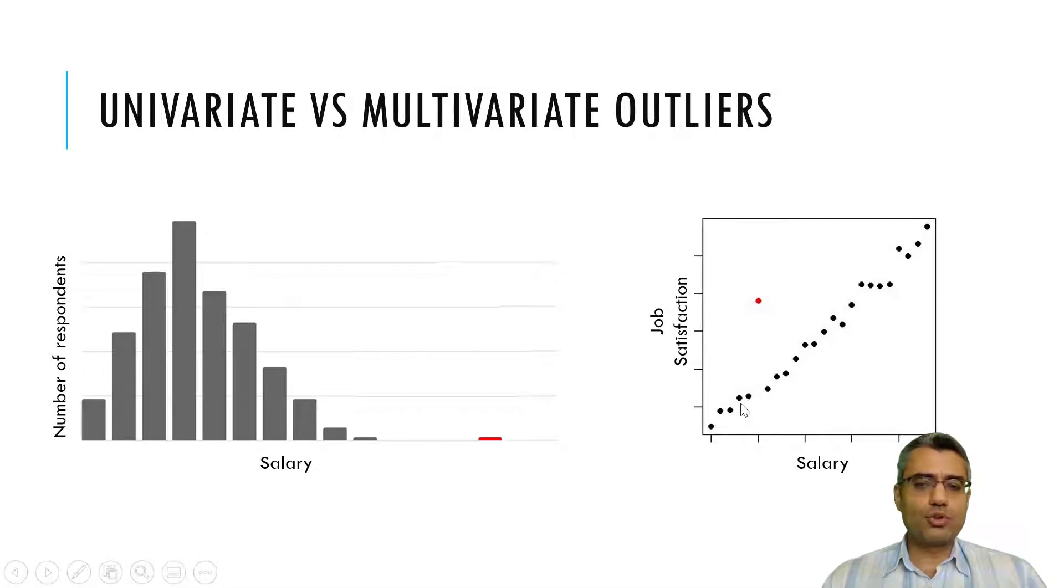So you see these black spots, easily you can draw a line, a regression line here, and that regression line is the model. So it shows there is a positive relationship between salary and job satisfaction—means more salary, more satisfaction.